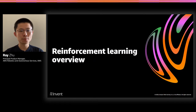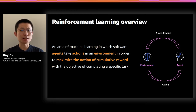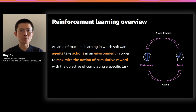So first, we'll take a quick look at the basic concept of reinforcement learning. Here's a description of what reinforcement learning is. It's an area of machine learning where a software agent — in our case, for example, an agent running on the robot — takes an action in the environment, trying to maximize a notion called a reward in order to achieve the desired behavior and outcome. I will get into more details about what these terms mean and walk you through a very concrete example.